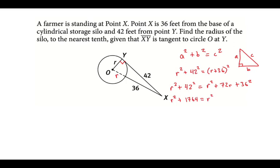So squaring 42 is going to get us 1,764. And on the other side, we have our r squared plus 72r. And 36 squared is 1,296.